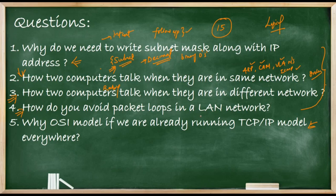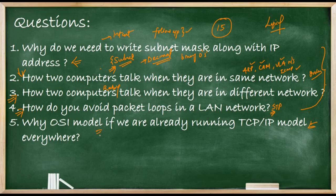The fourth question is Layer 2 loop prevention. You may notice I haven't mentioned the name of a specific technology — the question asks how you would avoid a loop in a Layer 2 network. The intent is to test your knowledge of STP, or Spanning Tree Protocol. Most of the time an interviewer asks a question without mentioning the name of the underlying technology, and it's your responsibility to figure out the exact concepts you need to explain.